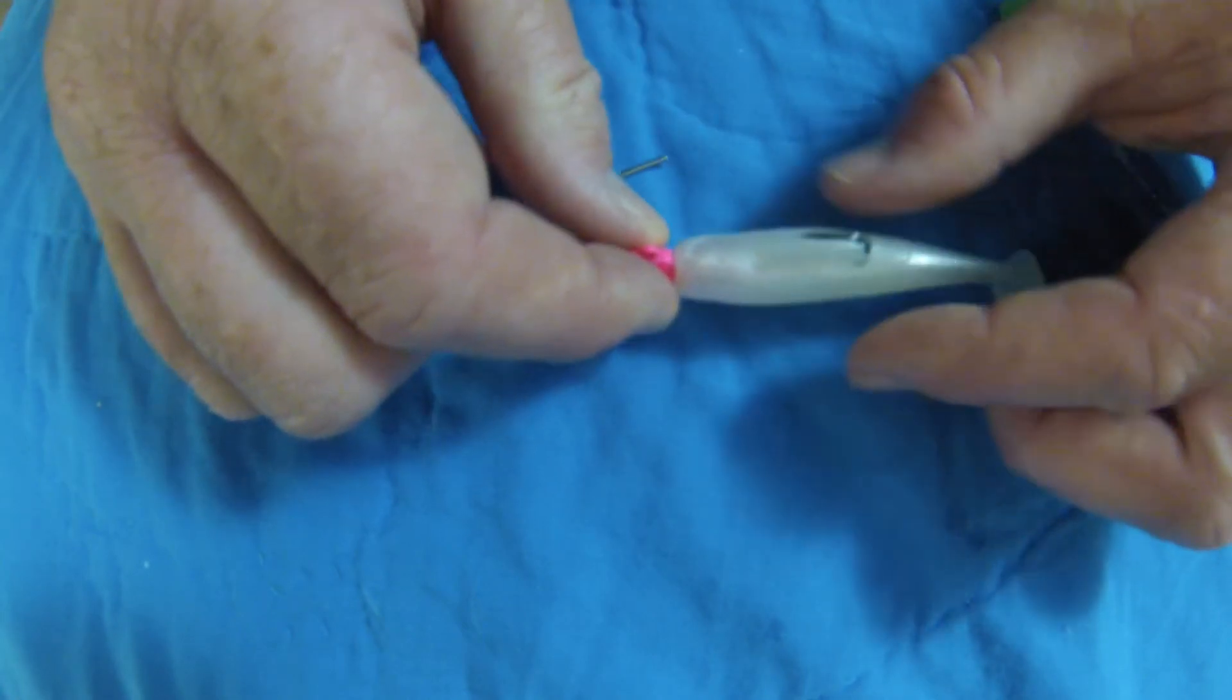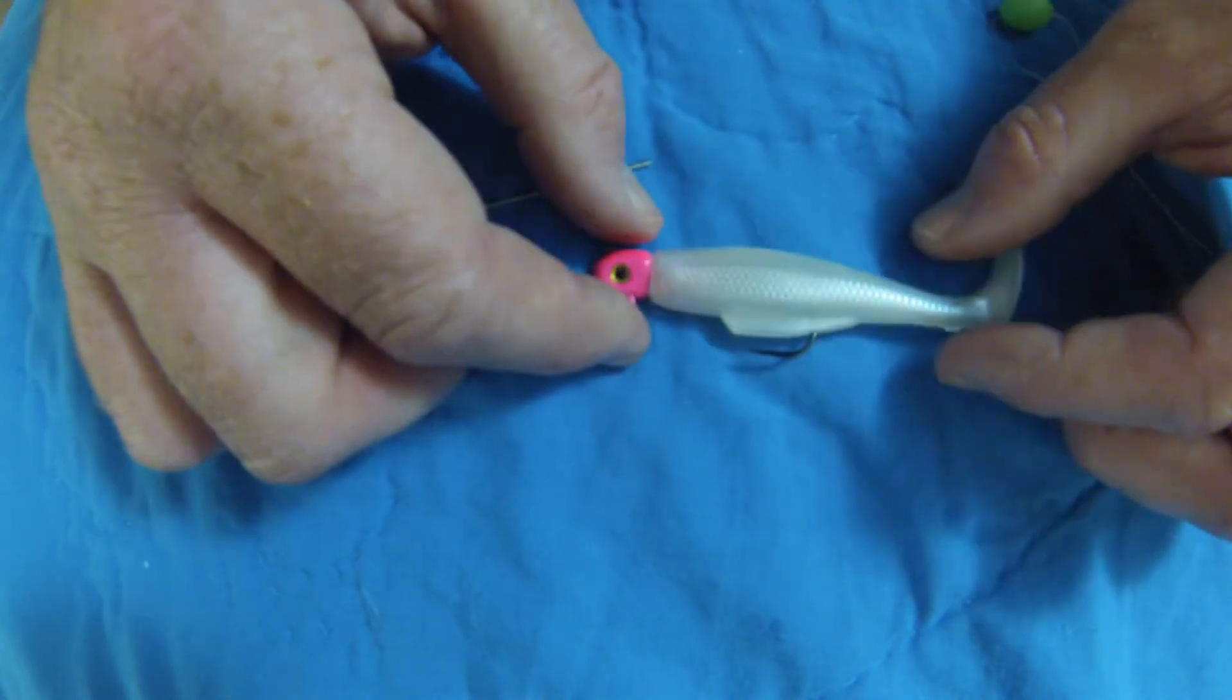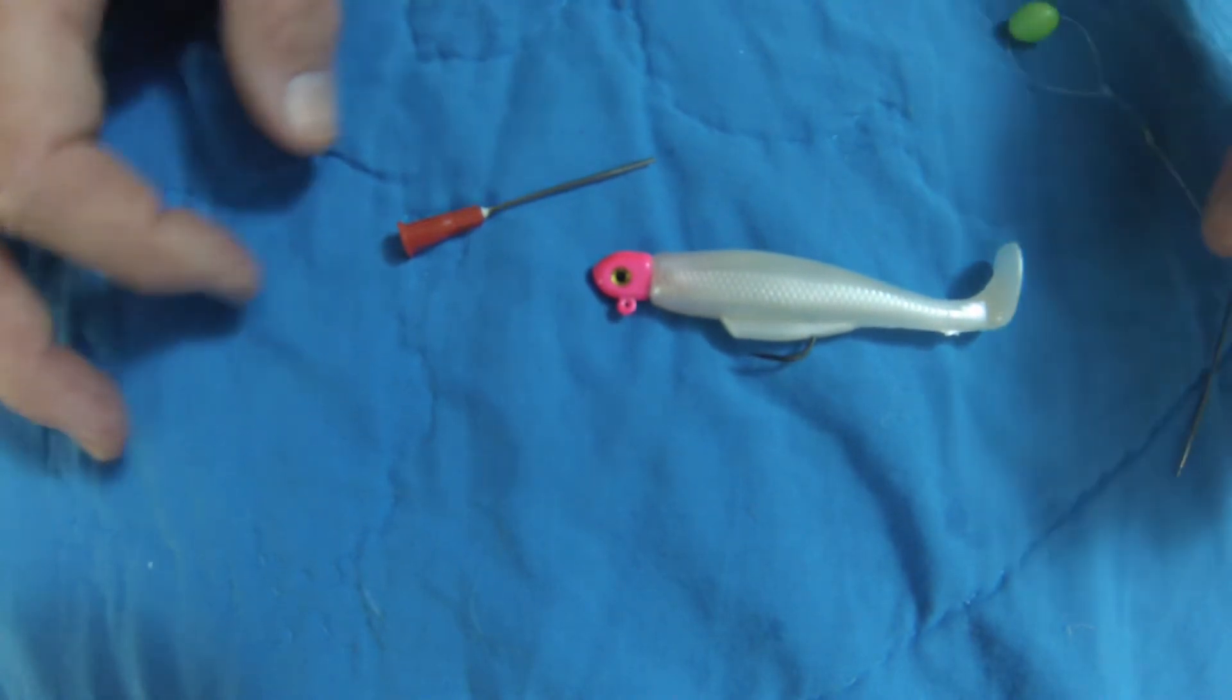Soft plastic, easy as that. No need to worry about it bunching on the hook when you're trying to get it just right. So yeah, that's how I rig my soft plastics and have been for a while now.